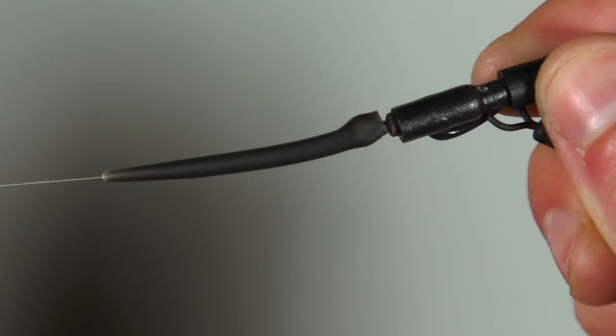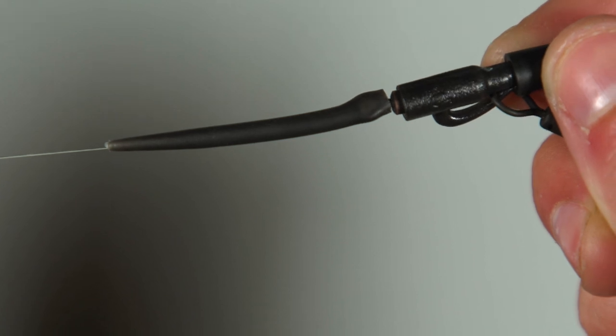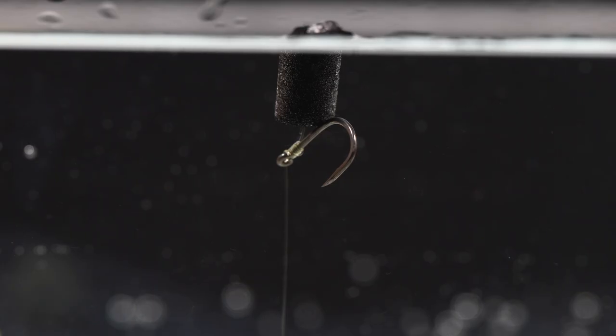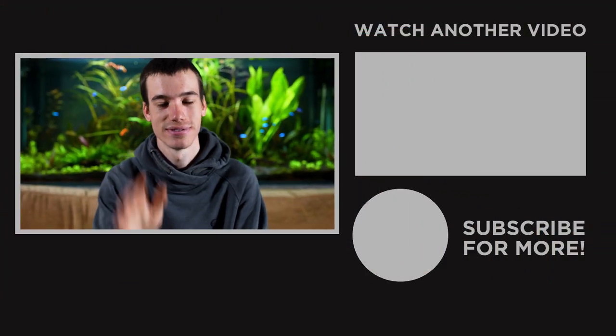As you can see the sleeve here helps avoid tangles, however you are bound to get tangled every now and then with such a long hook link like this. To learn how to tie loads more carp fishing rigs then click the playlist on screen now. See you next time.